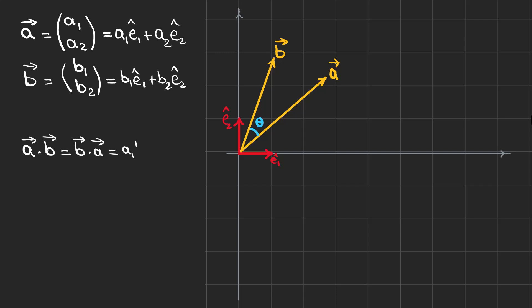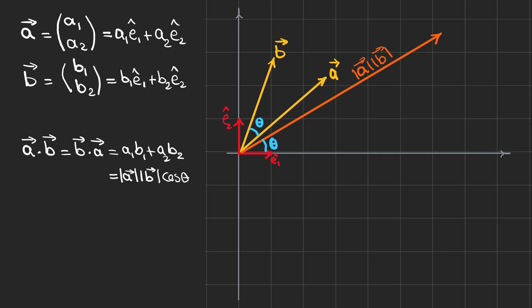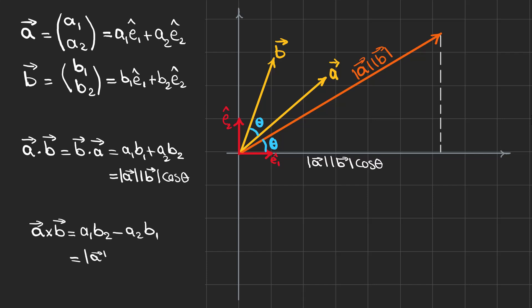We can write the dot product of a and b either in component form or in geometric form. Geometrically, if we have a vector whose magnitude is the product of |a| and |b| and whose angle with the x-axis is theta, we can form a right triangle, and the x-component is |a||b| cosine theta. We can also write the cross product as a1·b2 minus a2·b1, or as |a||b| sine theta, and in the right triangle this side is |a||b| sine theta.